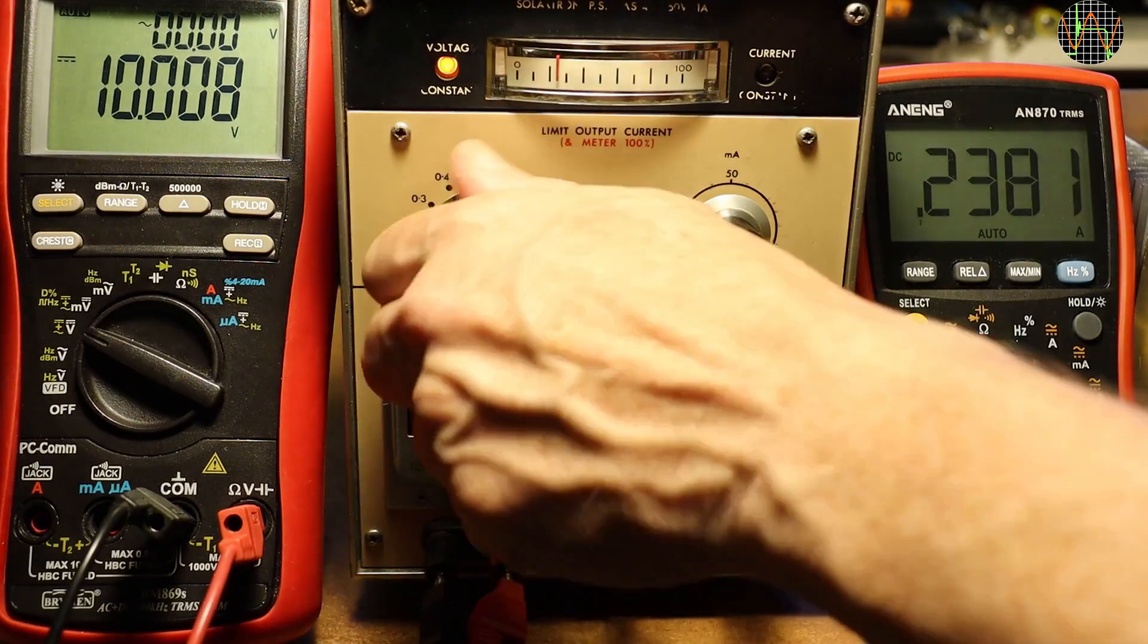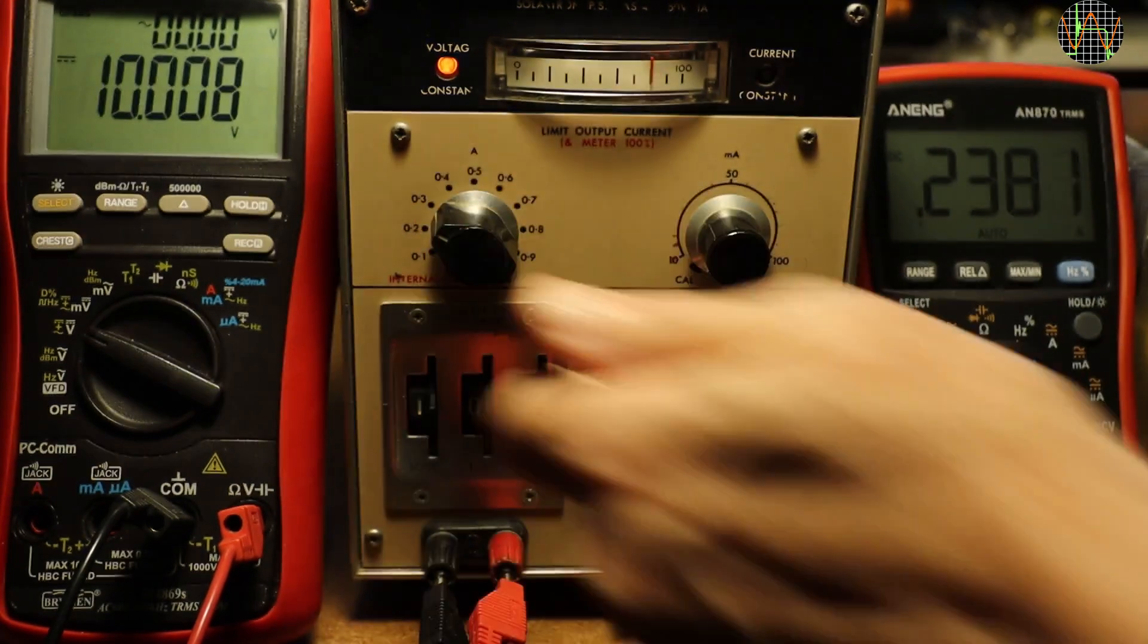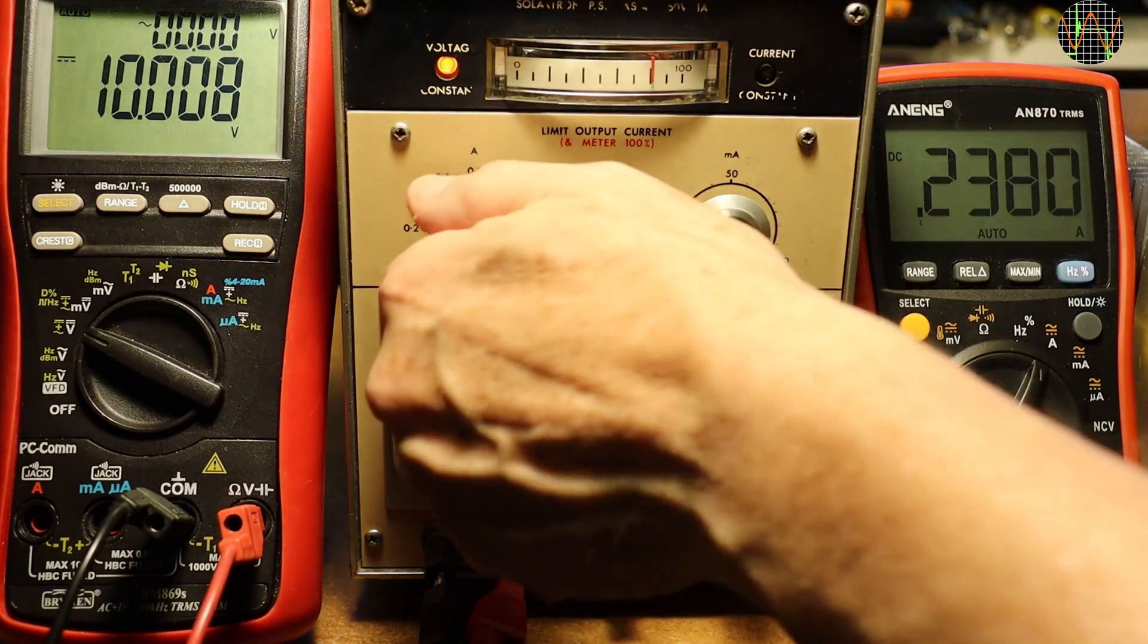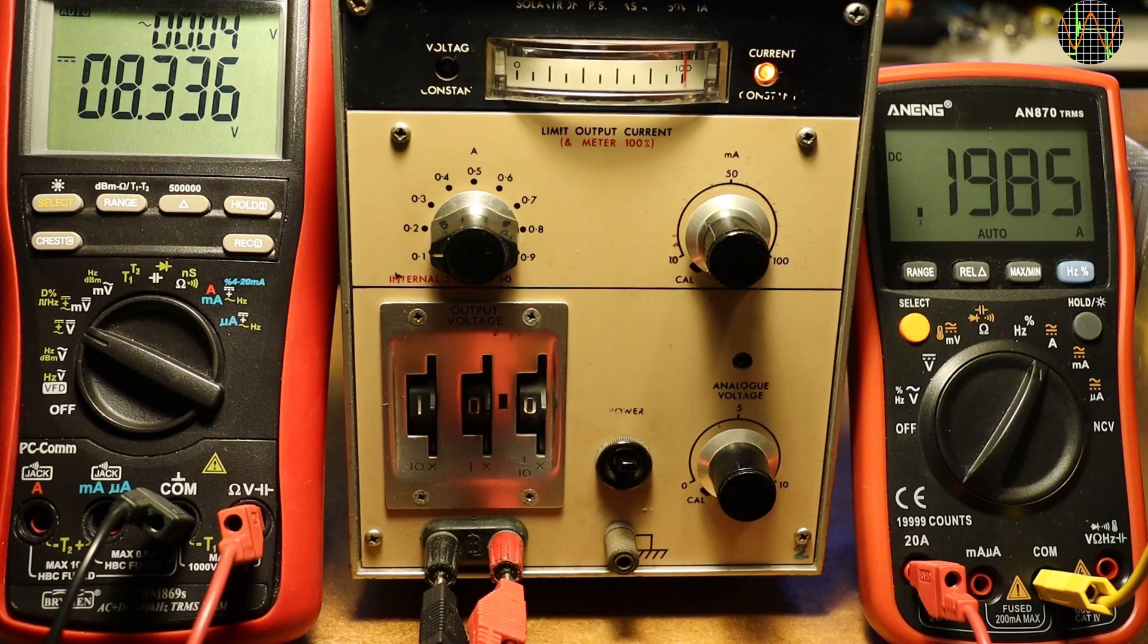Conversely, reducing the current limit increases the meter reading at 0.3A current limit and the meter shows that 0.238A represent now 80% of the available current. And of course, lowering the current limit to 0.2A, the constant voltage light goes off because the voltage is now only 8.3V instead of 10V to stay at 0.2A. The meter shows that 100% of the allowed current at this setting is flowing. Once you get your head around that the meter is always showing percent of the selected current limit, it is actually quite neat and has the advantage that the resolution follows the current limit.